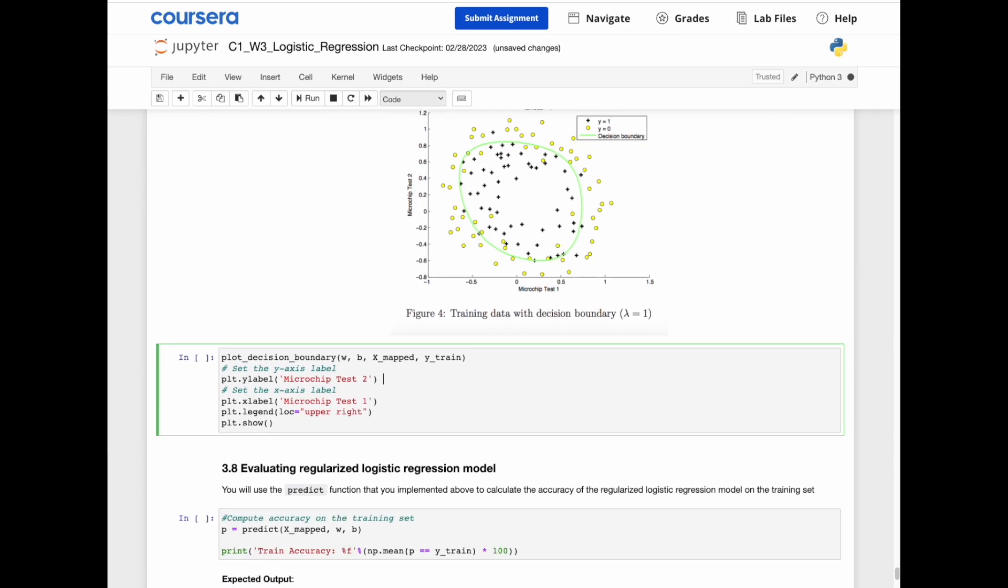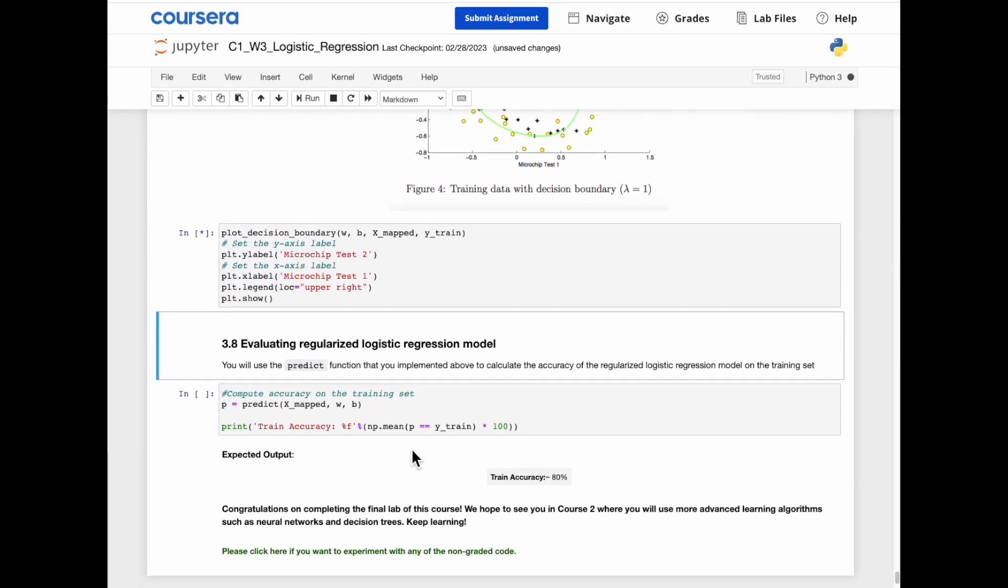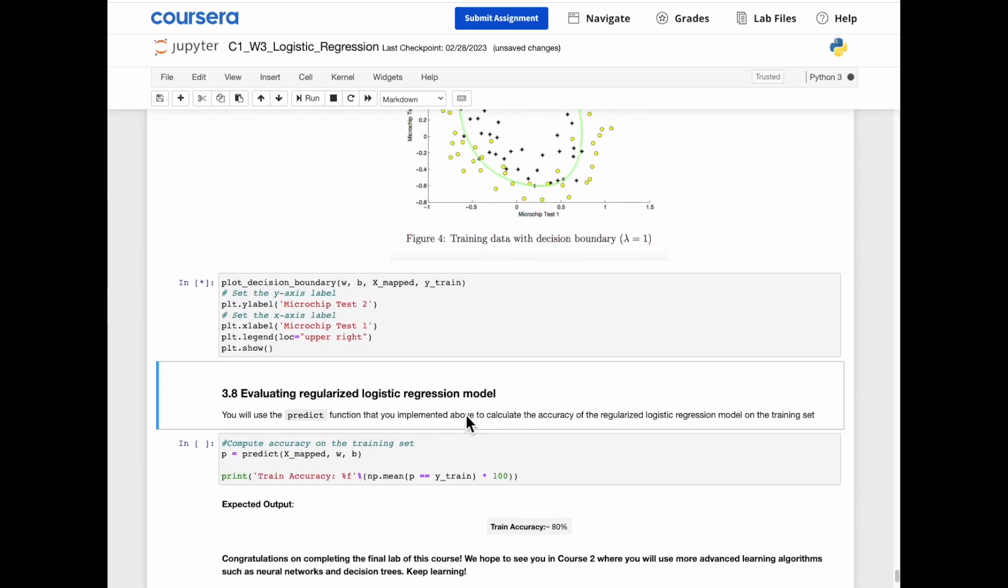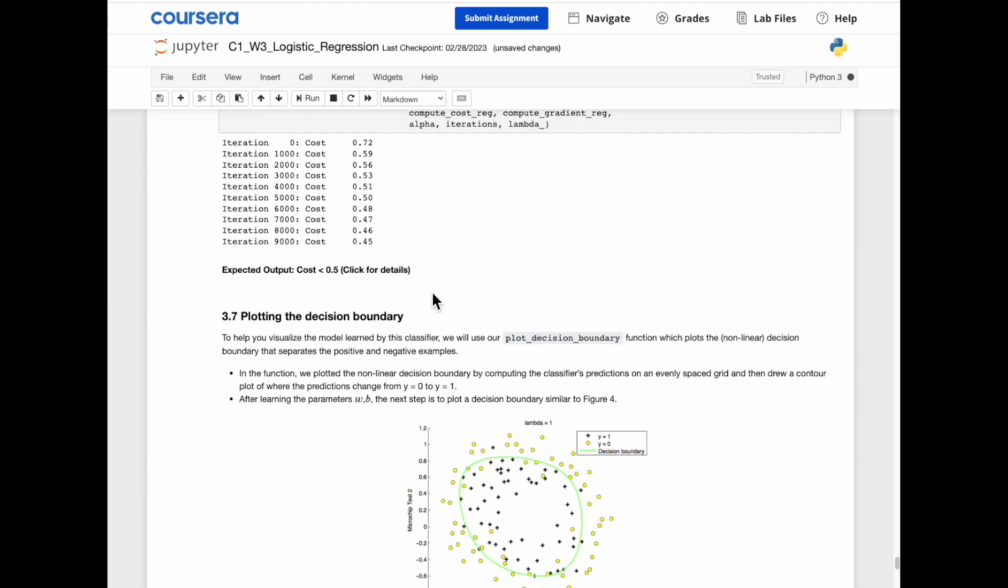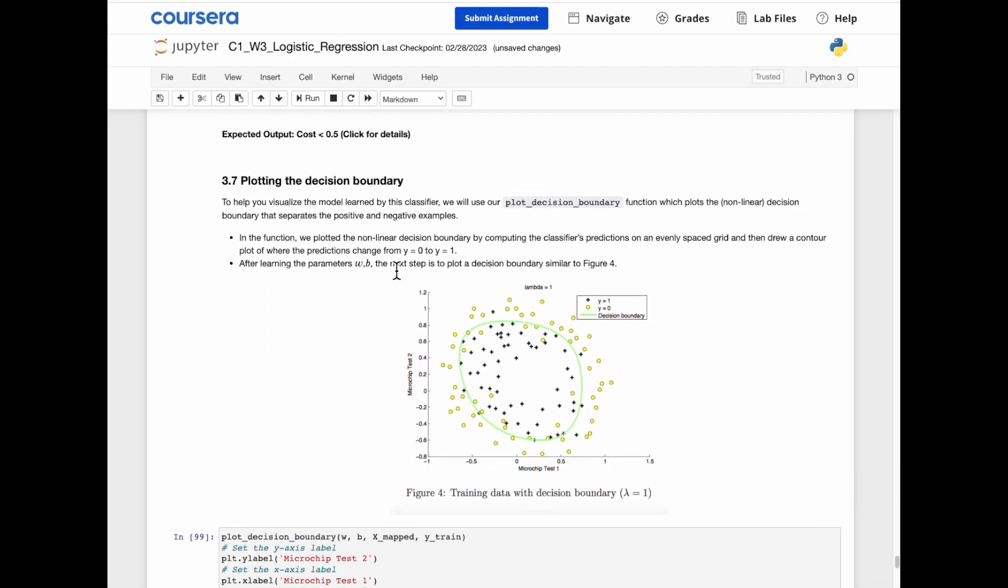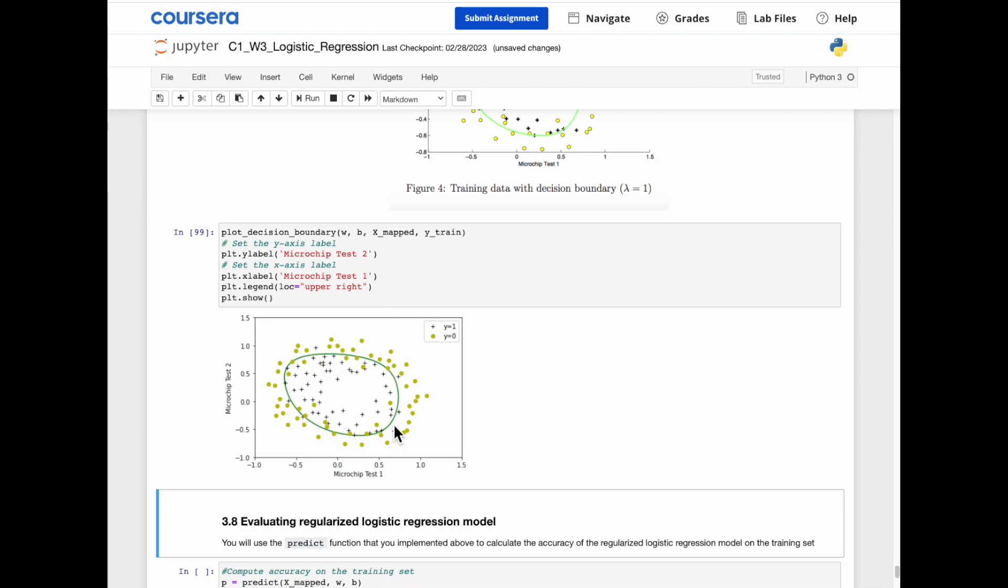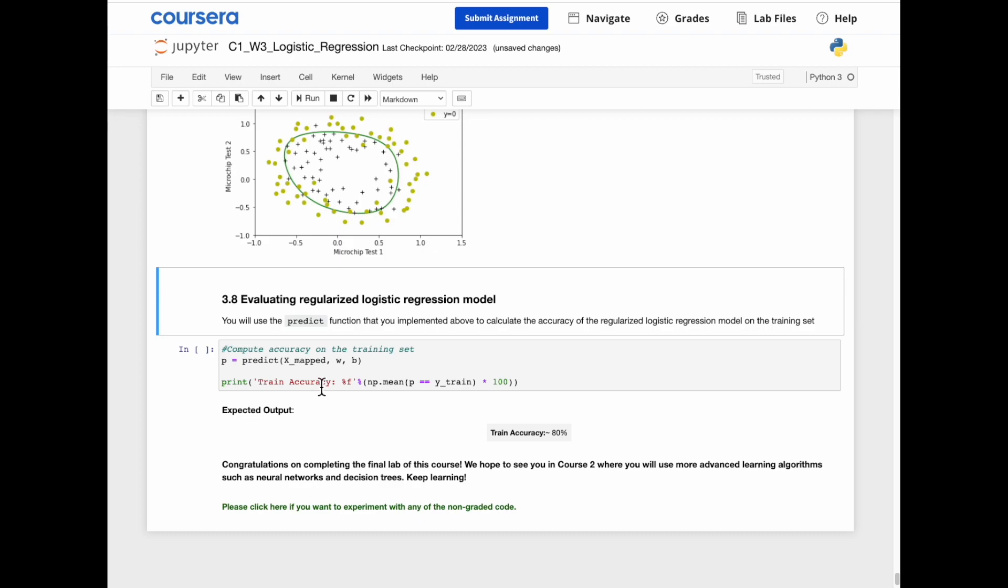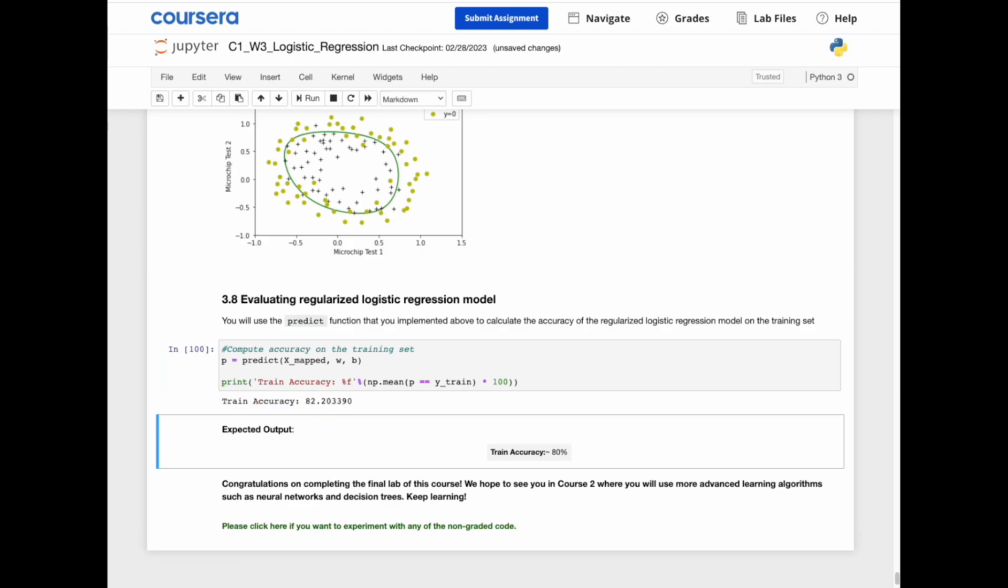Now we're going to plot the decision boundary. And it's taking a while. But we see that the cost function has gone down significantly from 0.72 to 0.45. And the decision boundary looks like what we expected, where the bad chips are on the outside of this circular-like graph, and the good chips are the ones in the middle. And we're going to see how well the training accuracy is, which is 82%. And we're done.